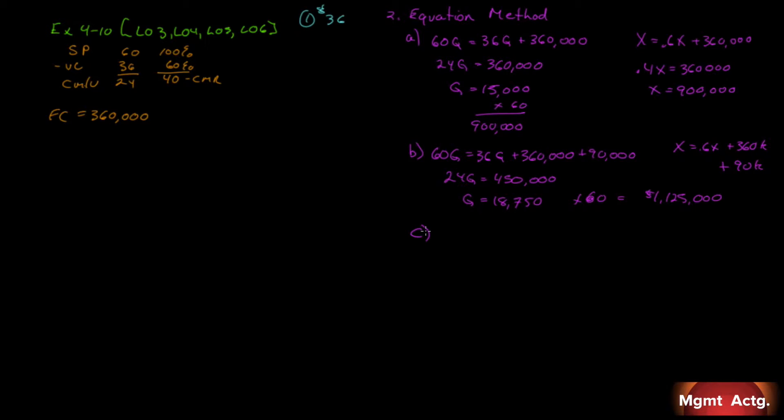C. What is C asking us? C is saying, what sales level in units is required to earn an annual after-tax profit of $90,000 if your tax rate is 25%? Well, units, so we know we're dealing with Q and not X. So we'll still have 60Q equal to 36Q, there's our variable cost, plus our fixed cost of $360,000, plus we need an after-tax profit of $90,000.